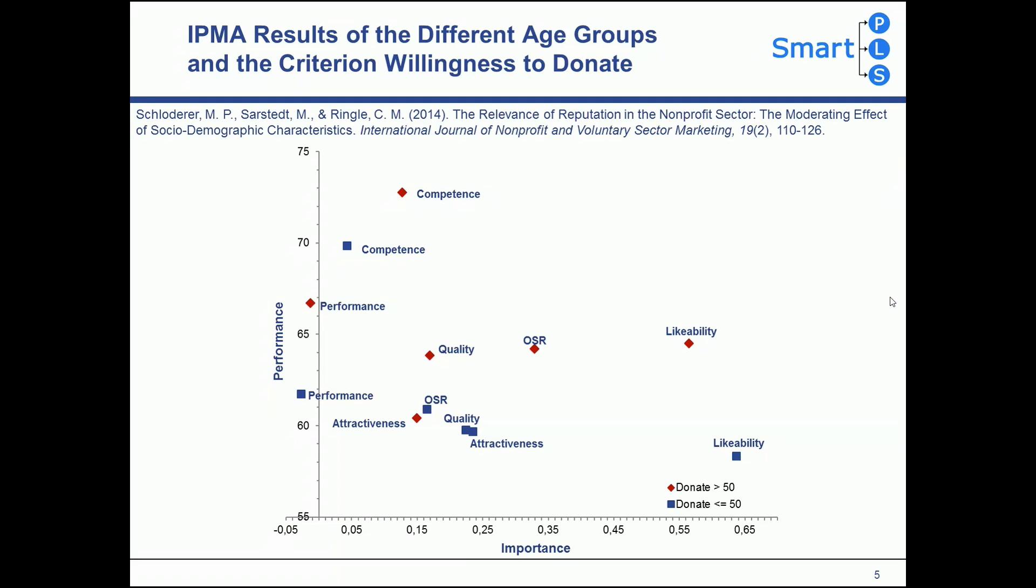First, the performance of the younger persons is always lower than that of the older ones. Second, likability should receive the highest priority of performance improvement in both groups. However, the results differ for the second priority. OSR should receive performance improvement for the older customers, while quality and attractiveness should receive performance improvement when it comes to the younger customers.